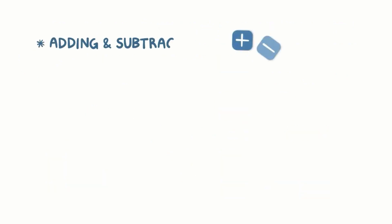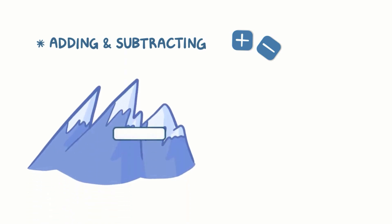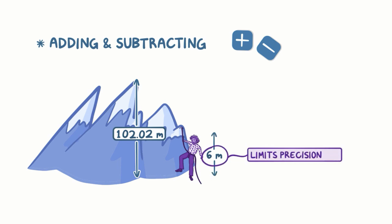Now let's look at rules for adding and subtracting. Suppose we're adding two measurements together. The first measurement is 102.02 meters, but we don't know the tenths or the hundredths place for the second measurement, which is 6 meters. So the second measurement limits the precision of the final answer to the ones place. Since we don't know any decimal places for one of the measurements, we cannot know it for the final answer either, so we add the two measurements together to get 108 meters.